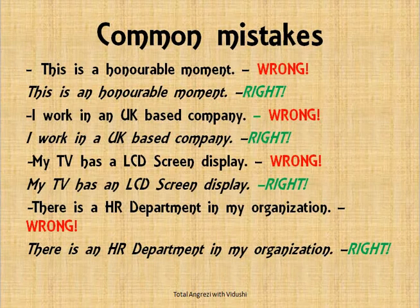Now there are some common mistakes we make because we confuse articles with vowel and consonant letters rather than sounds. For example: 'This is a honorable moment' — this is wrong. Many people don't know that H in 'honorable' is silent. The sound actually comes from O, and O is a vowel, therefore you must say 'This is an honorable moment.'